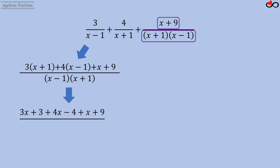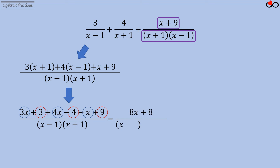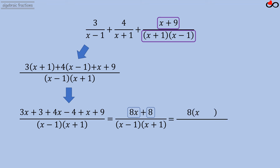We collect like terms in the numerator: 3x plus 4x plus x gives 8x, and the constant terms 3 plus negative 4 plus 9 give 8, so the numerator becomes 8x plus 8. The two terms in the numerator have a common factor of 8, so we factor 8 out to get 8 times (x plus 1). We then cancel the (x plus 1) factor to reduce the fraction.